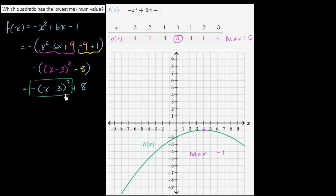The only thing that this part of the expression can do is subtract from the 8. So if you want to get a maximum value, this should equal 0. This equals 0 when x equals 3. When x equals 3, this is 0, and our function hits its maximum value of 8.